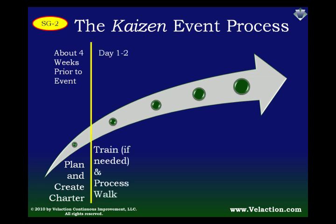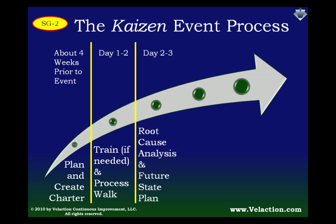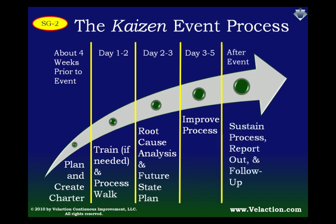When the planning is done and the event week starts, the first day is often reserved for training and is soon followed by a process walk where detailed data is collected — this is the equivalent of the Measure step. That information is then analyzed and improvements are planned in the form of a future state process. The bulk of a Kaizen event is spent on improving the processes. Make sure you feel free to go back to the Measure and Analyze steps if needed. Finally, you will complete an audit plan and do follow-up activities to sustain the project.